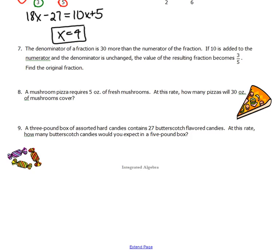So I'm going to do ounces over pizza, and that will keep me consistent. Five ounces of mushrooms for one pizza. At this rate, how many pizzas will 30 ounces? So my ounces go on the top, and then I want to know how many pizzas is x. So 5x = 30 and x = 6.